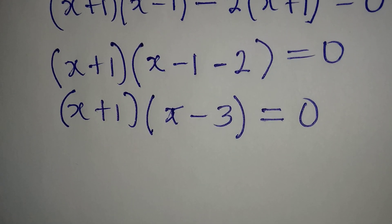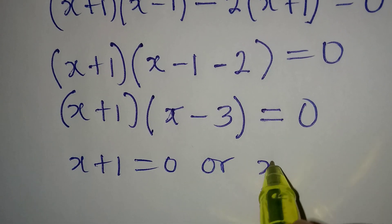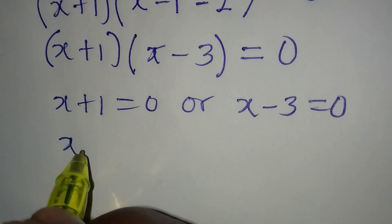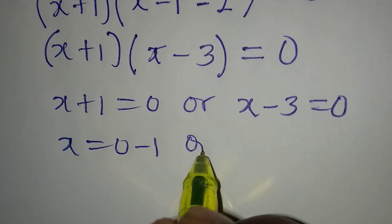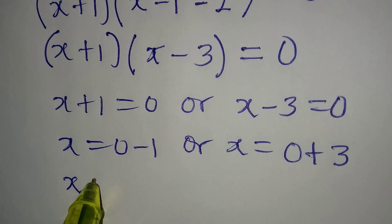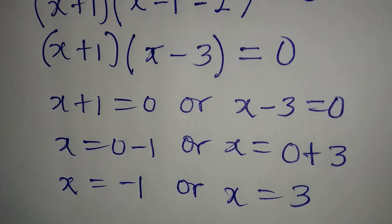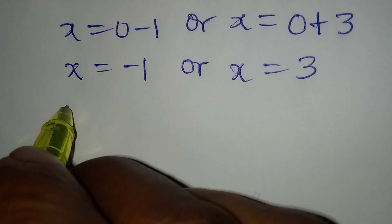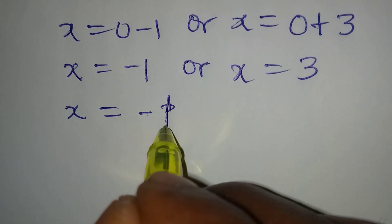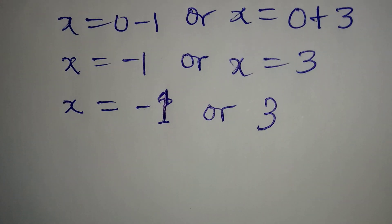From here we apply zero product rule, meaning that x plus 1 is equal to 0 or x minus 3 is equal to 0. From here, x is equal to minus 1 or x is equal to 3. So these are the two values of x.